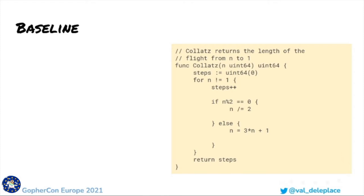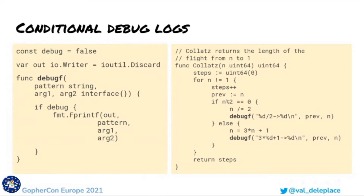We are not interested in the computation details. Now I introduce the function debugf, which does this: if in debug mode, then print the argument; if in production mode, then do nothing. The debug mode is a compile-time constant, which I set to true during the development phase and to false before shipping to production.